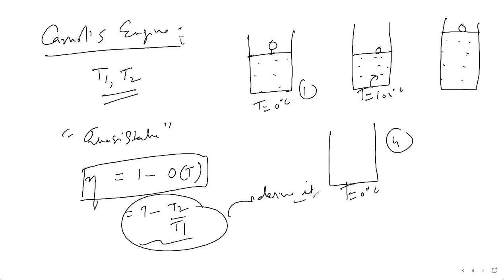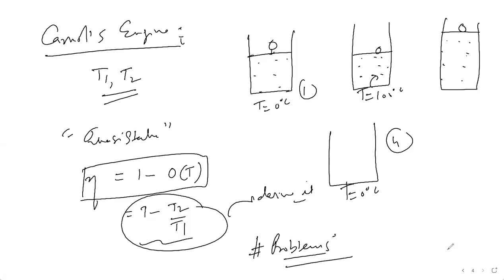This work was published by Sadi Carnot in 1824, which laid the foundation for the second law of thermodynamics. No engine has an efficiency greater than the Carnot engine — we will see many problems on this because they will come in your exams. The limiting efficiency is basically a function of temperature — that's the core idea.